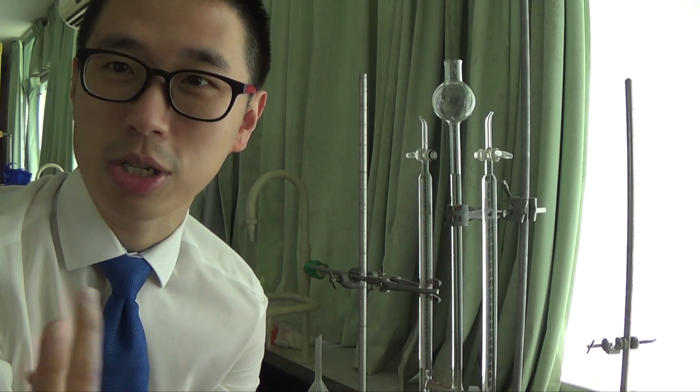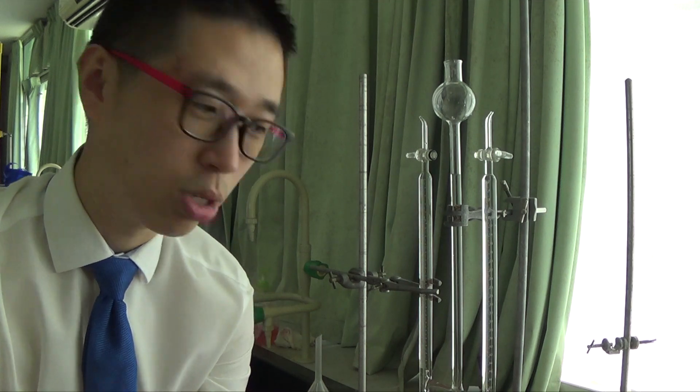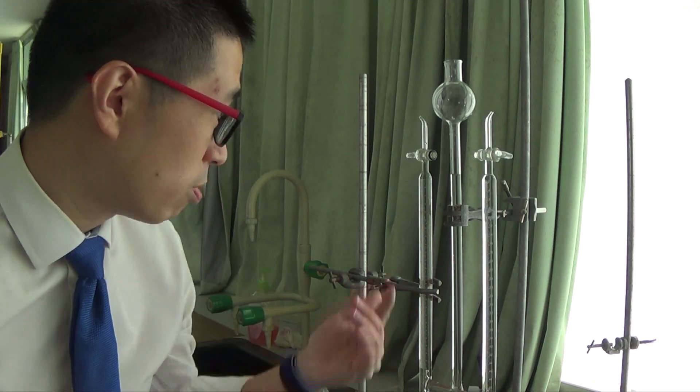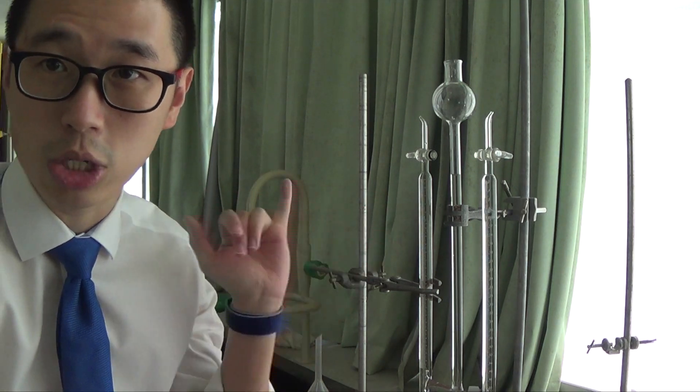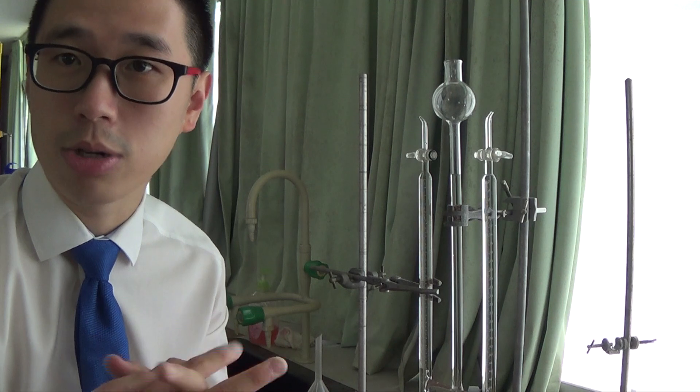RIC is the acronym for reduction happening at the cathode. Reduction is the gaining of electrons and oxidation is the loss of electrons. It should be pretty obvious because we're going to get hydrogen at one electrode and oxygen at the other electrode. We are essentially splitting water, electrolyzing water.